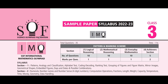In this video we are going to cover the SOF IMO — International Math Olympiad. This is a sample paper for the syllabus 2022–2023 for class 3. The total questions will be 35. The pattern: logical reasoning skill — 10 questions, mathematical reasoning skill — 10 questions, everyday mathematics — 10 questions, and the achievers section — 5 questions. The first three sections carry one mark each and the achievers section carries two marks per question.